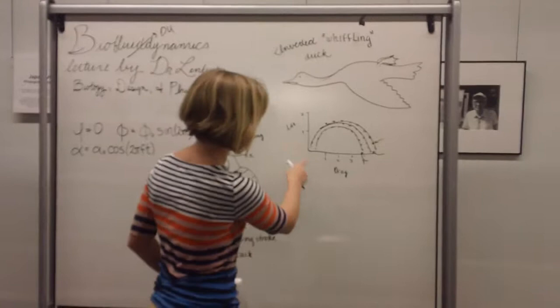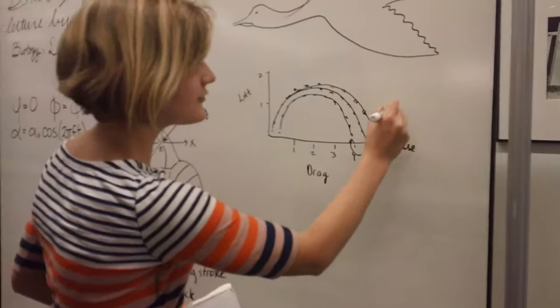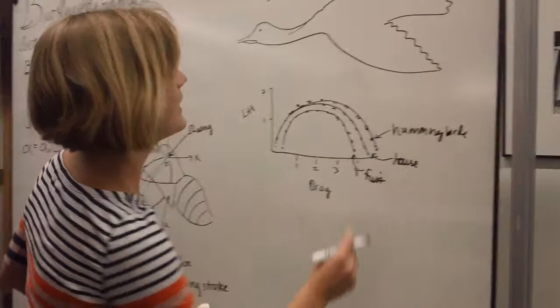Well, if you look at this graph, it shows the lift and drag of three different species. This is for fruit flies, and then this one's for house flies, and this is for hummingbirds. Now, why is that so important?